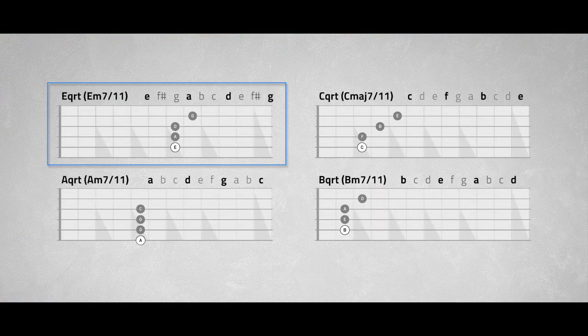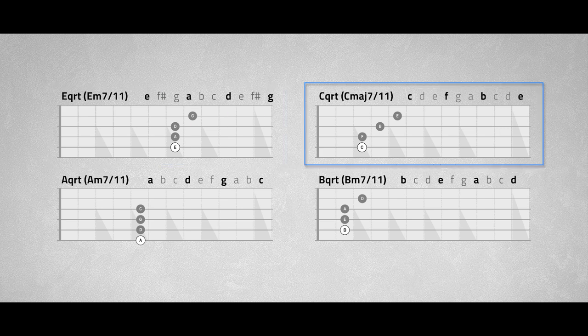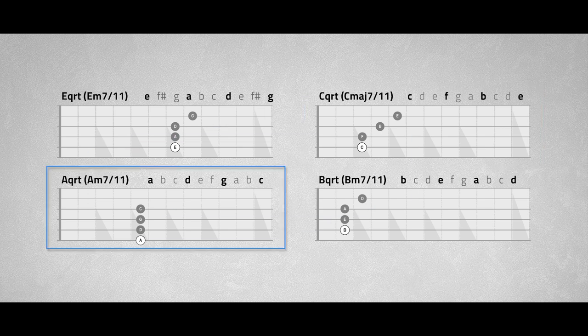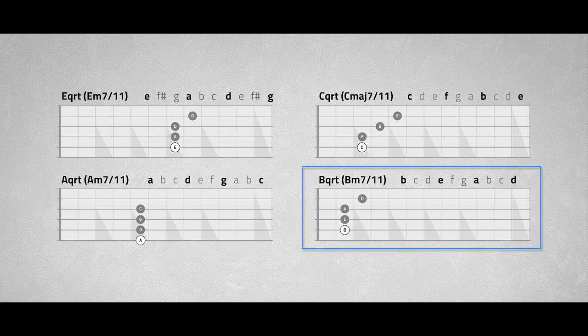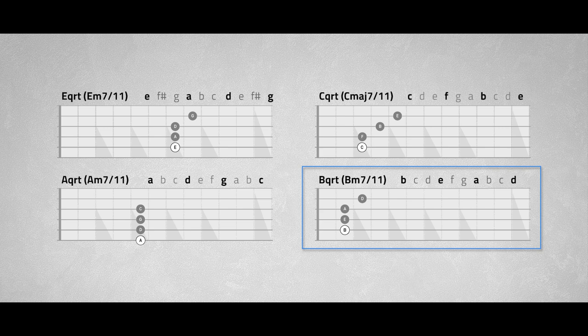E quartal contains the notes E, A, D, and G. C quartal contains the notes C, F, B, and E. A quartal contains the notes A, D, G, and C. And B quartal contains the notes B, E, A, and D. Now the progression sounds like this.